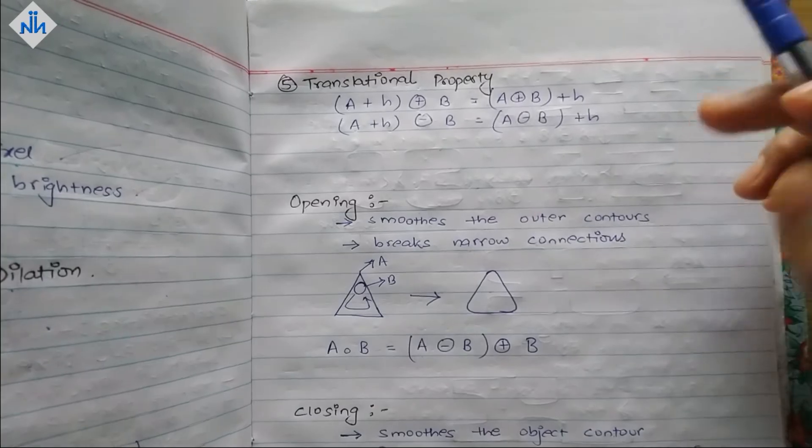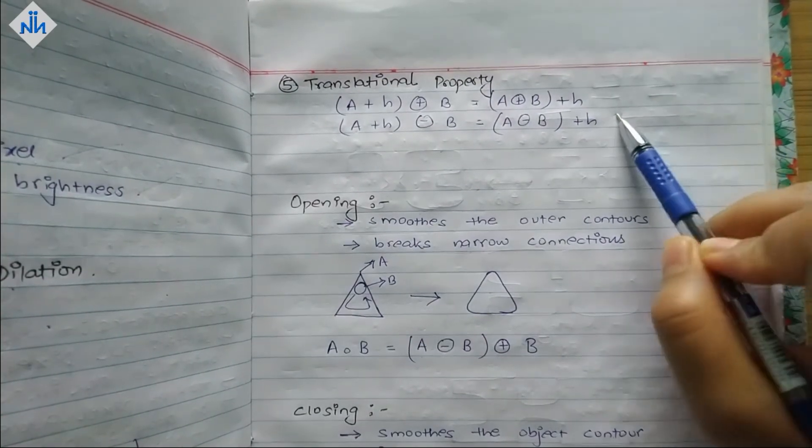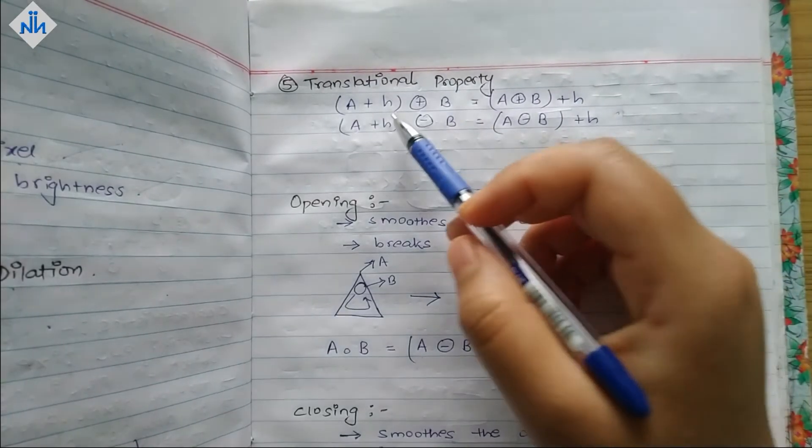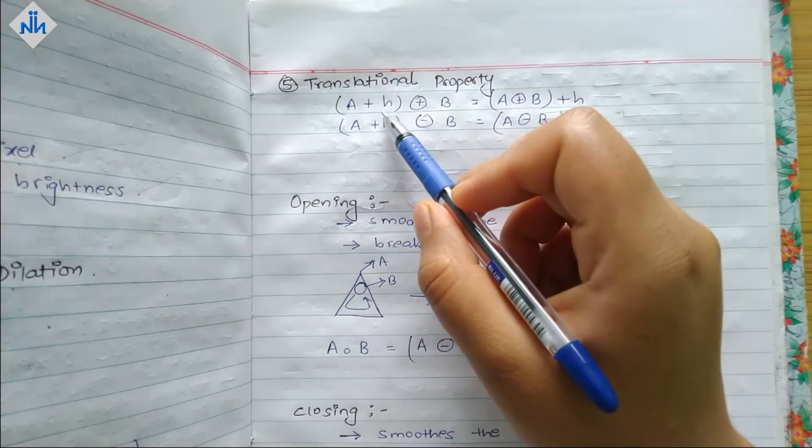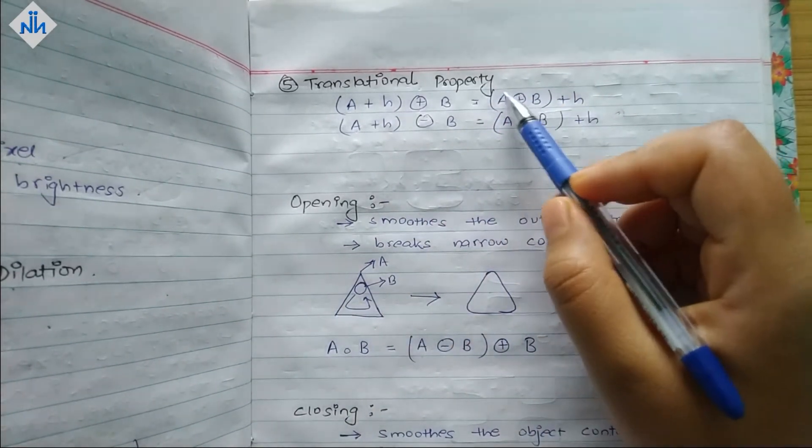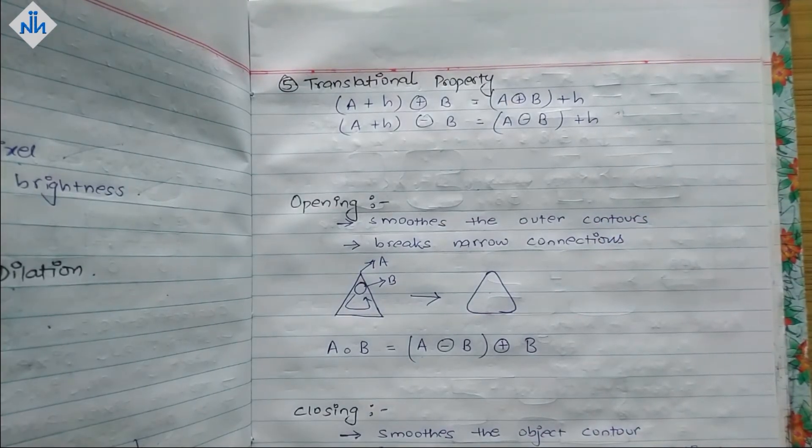And at the end we have translational property. And it holds for both. So you can see this is what translational means. That means if an image is shifted by H and then after doing dilation it is shifted by H, then it will remain the same image.